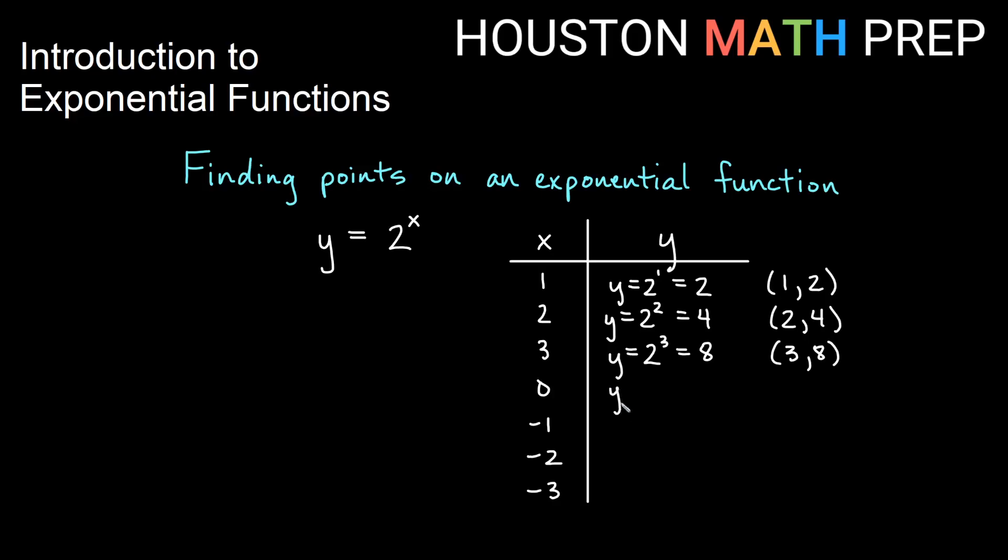Plugging in 0, remember this property, if I had 2 to the 0, any number to the 0, as long as the base is not 0, it's going to give us 1. So this is going to be 0, 1 as a point.